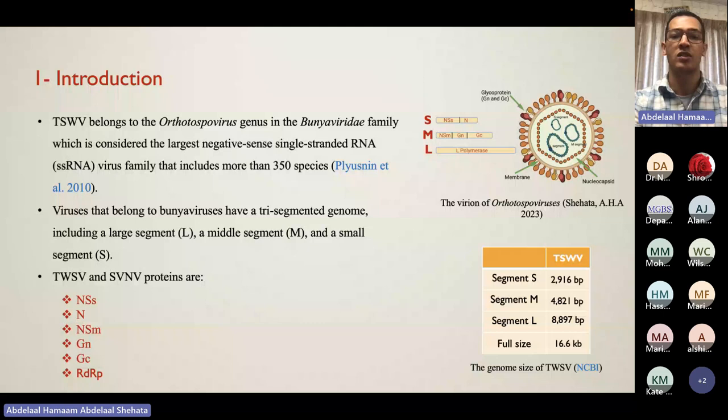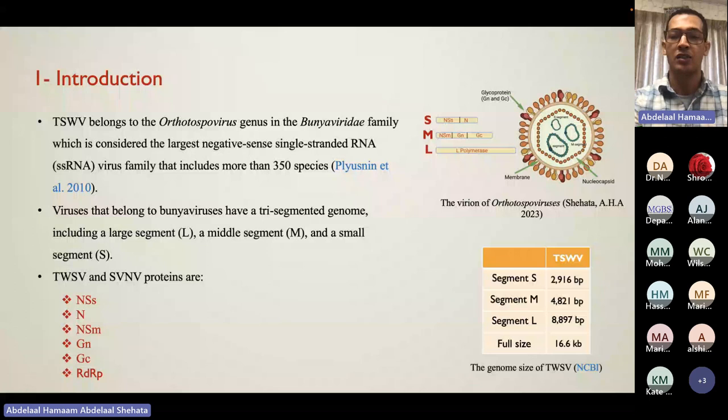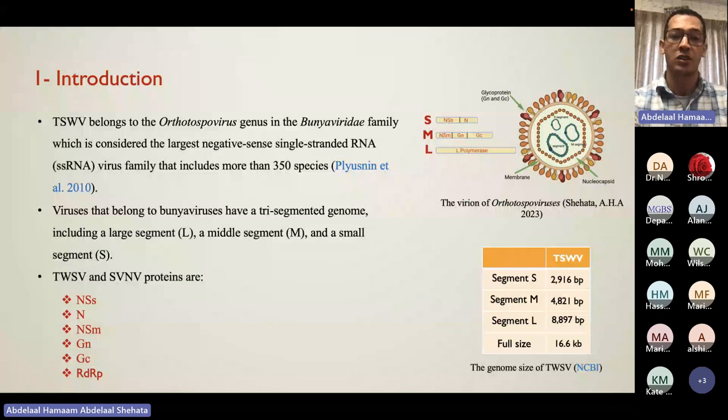As an introduction about TSWV, this virus belongs to a genus called Orthotospovirus, and this genus fits in a family called Bunyaviridae. This family has both viruses that infect plants and animals — these viruses are very interesting because they can cross kingdoms. Our virus, TSWV, can multiply and replicate in insects and also replicate and multiply in plants, which are two different biological systems.